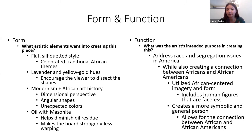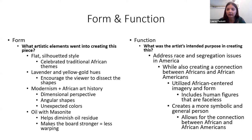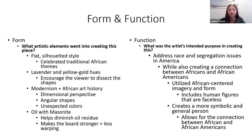Being in the 1940s during the Harlem Renaissance, he was still using aspects of modernism combined with African art history — dimensional perspective, angular shapes, and the lavender and yellow contrast use unexpected colors. With oil and masonite, painting on that kind of surface diminished the oily look and made it more resistant to warping over time.